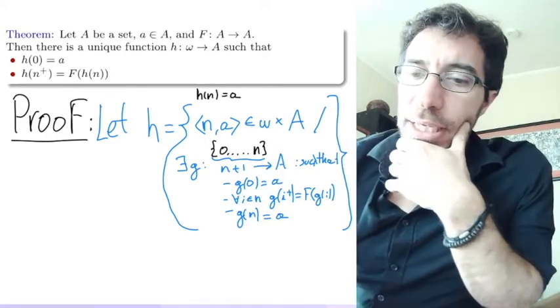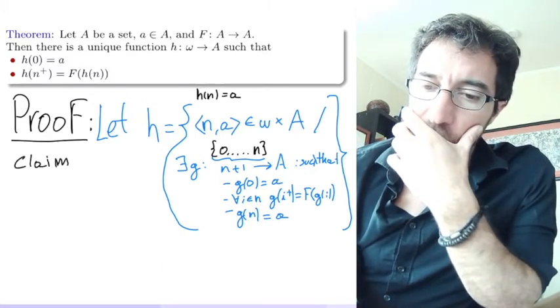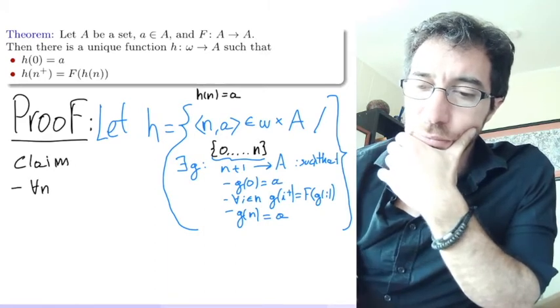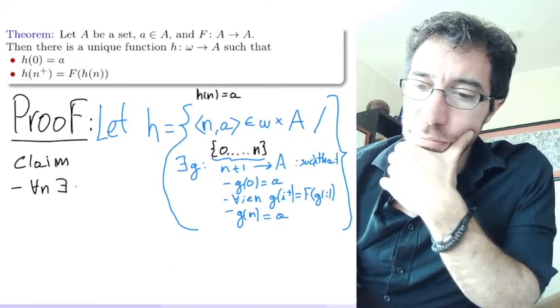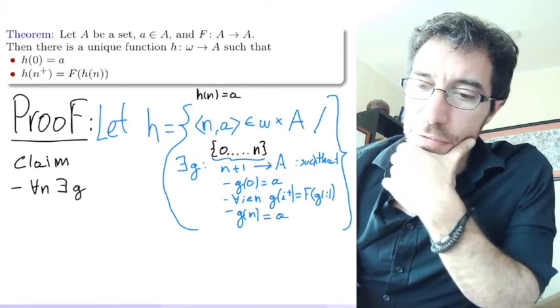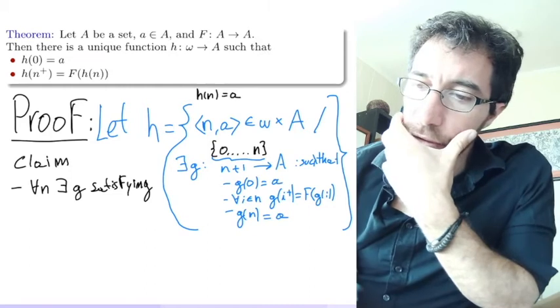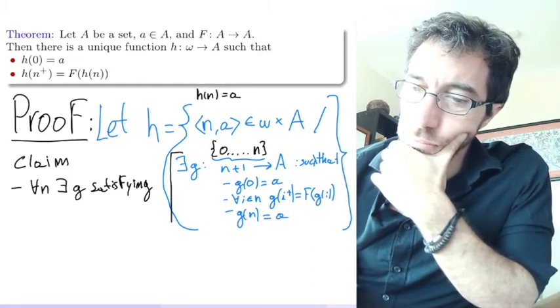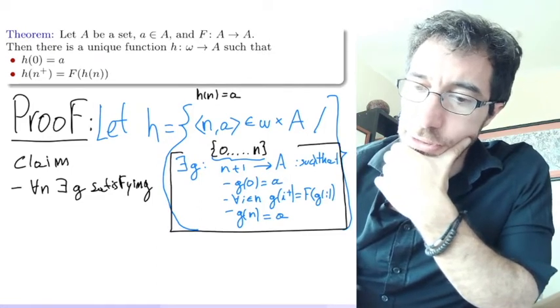But then we need to claim two things. So one is that for every n there exists a g satisfying all of this. Let's call this star.